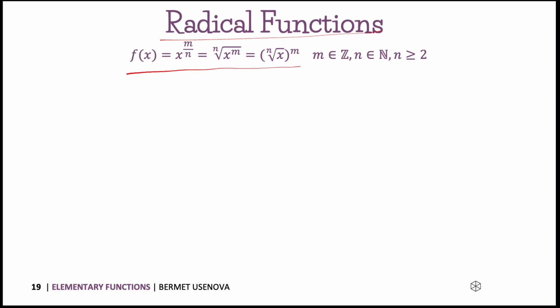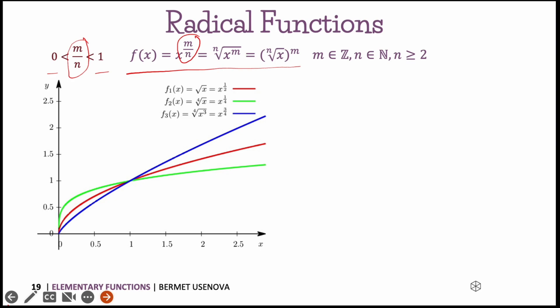The shape of the graph depends on the sign of the exponent and the ratio between m and n. If the fraction in the exponent is between 0 and 1, the graph looks like this — starting with the square root of x, or x to the power of one-half, then x to the power of three-fourths, and x to the power of one-fourth. For larger values of the fraction the graph becomes less steep and tends towards infinity in this direction.